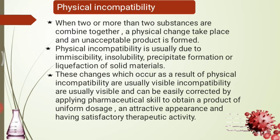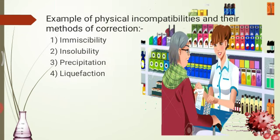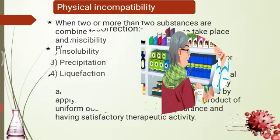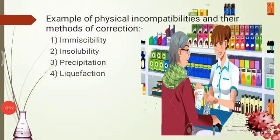The first example of physical incompatibility is immiscibility. Oils and water are immiscible with each other but can be made miscible by emulsification. For example, castor oil and water — in this prescription, castor oil is immiscible with water. To overcome this incompatibility, an emulsifying agent is used to make a good emulsion.